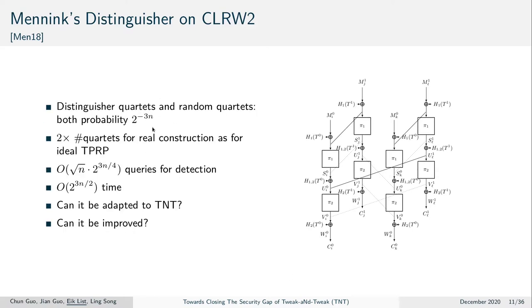The probability of a quartet was about 2^(-3n/4). Those quartets not only occur because of the structural property but also randomly. However, for the real construction, one could observe twice the number of quartets as in an ideal tweakable permutation. Therefore, roughly sqrt(n) · 2^(3n/4) queries are needed for detection. Since he needed to go over all differences, the distinguisher needed more time and was only information-theoretic. Our question was: can this distinguisher be adapted for TNT and improved?